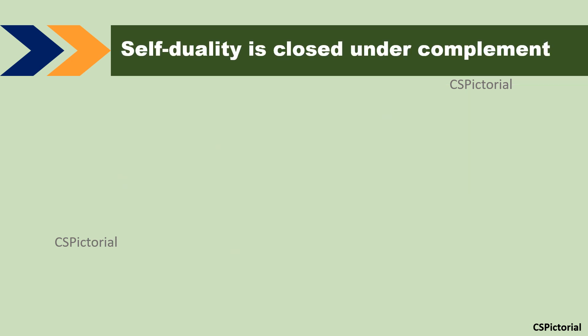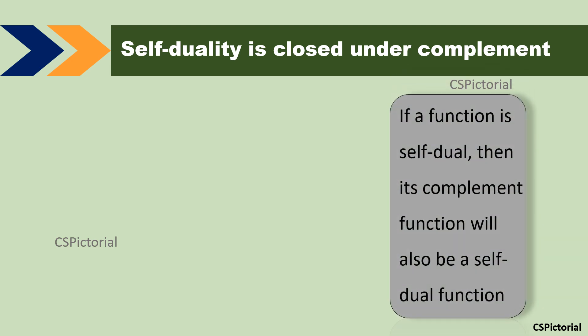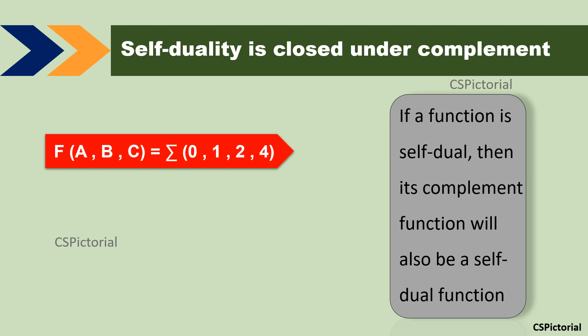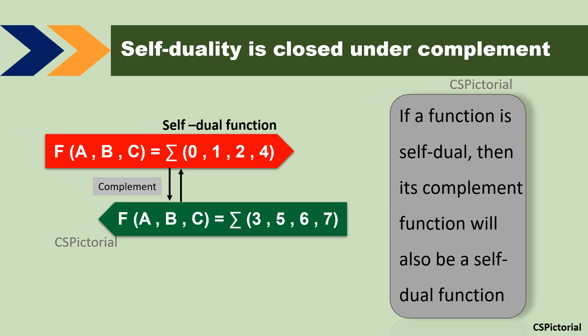An interesting fact is that self-duality is closed under complement. Which means if a function is self-dual, then its complement will also be a self-dual function. For example, if F(a,b,c) = summation(0,1,2,4) is self-dual, then its complement — formed by picking the terms not present — which is F(a,b,c) = summation(3,5,6,7) — is also a self-dual function.